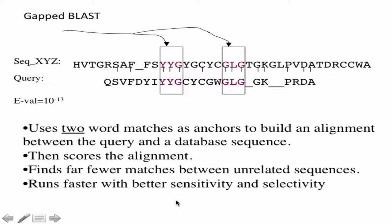The advantage of the two-word match is there are far fewer false positives — far fewer alignments triggered by sequences that are actually unrelated but share a very small region of similarity. By reducing false positives, the algorithm wastes less time extending unprofitable short alignments and can spend more time on the good ones.